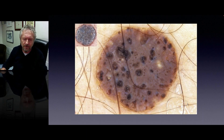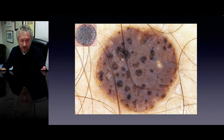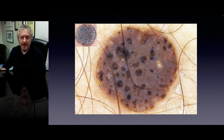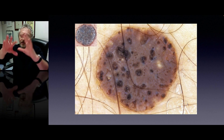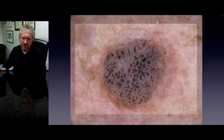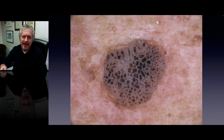Here is another example of seborrheic keratosis where you see black comedone-like openings, some milia-like cysts. The overall architecture is also present here.